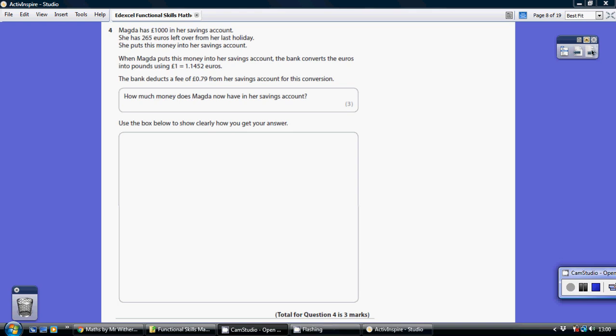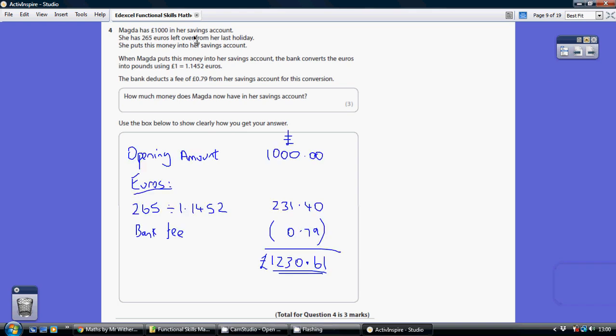Question 4. She already has £1,000 in her savings account. She's going to convert some euros into pounds and put those into a savings account. There's a little fee regarding that transaction and how much is she going to have after all of that.